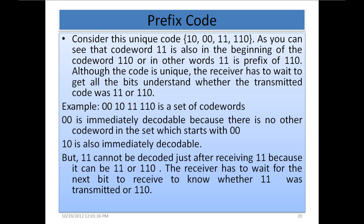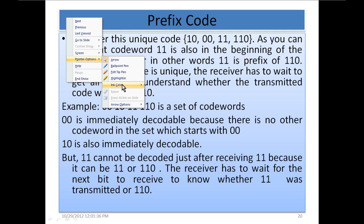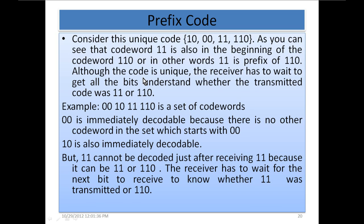Consider this code: 1 0, 0 0, 1 1, and 1 1 0. As you can see, the codeword 1 1 is also the beginning of the codeword 1 1 0 — in other words, 1 1 is a prefix of 1 1 0. Although the code is unique, the receiver has to wait to get all the bits to understand whether the transmitted code was 1 1 or 1 1 0.